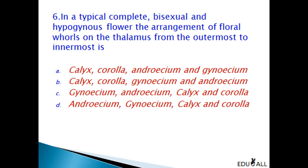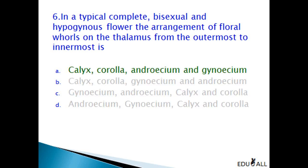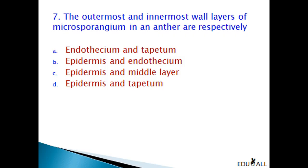In a typical, complete, bisexual and hypogynous flower, the arrangement of floral whorls on the thalamus from the outermost to the innermost is? We know that the outermost is the calyx, next is Corolla, next is Androecium (the male reproductive unit of the flower), and next to Androecium is Gynoecium (the female reproductive unit of the flower). Hence, the answer is A — Calyx, Corolla, Androecium and Gynoecium.